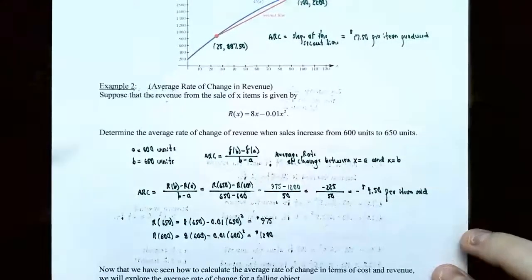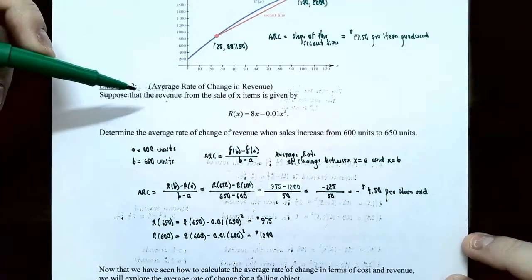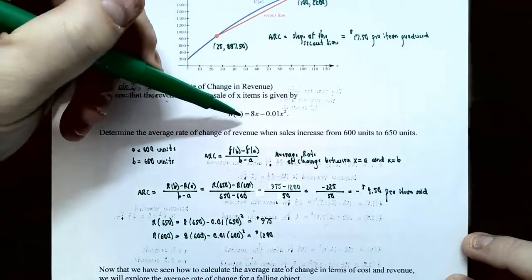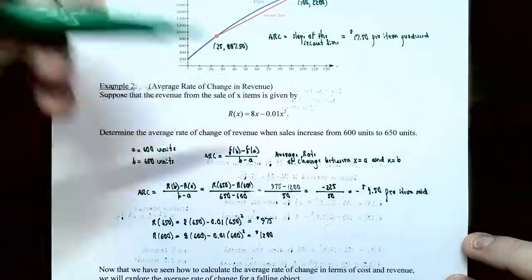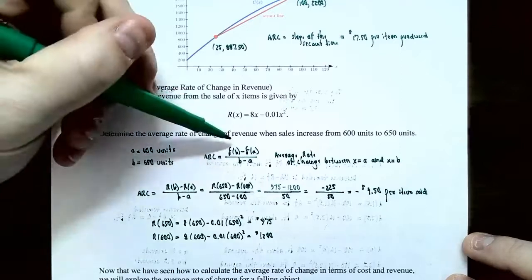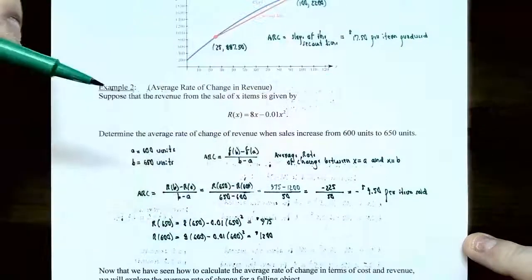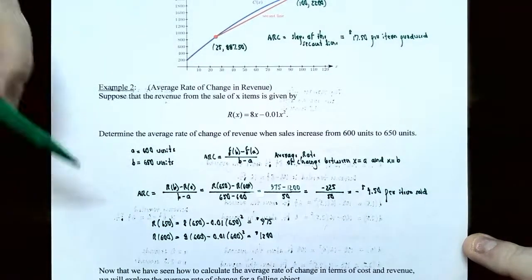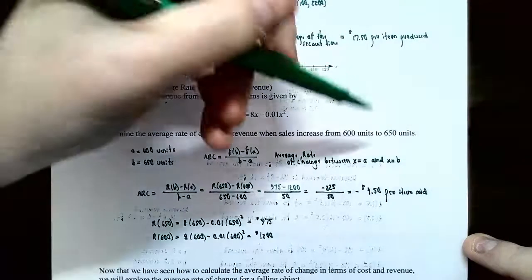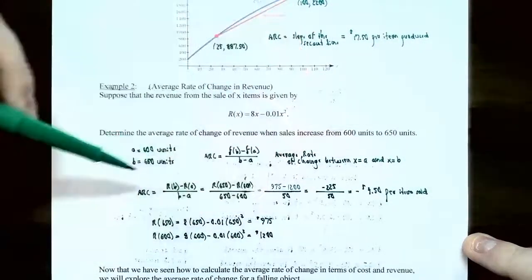Example two: average rate of change for revenue. Suppose the revenue function for the sale of x items is r of x equals 8x subtract 0.01x squared. Determine the average rate of change of revenue when sales increase from 600 units to 650 units. We have a closed interval — that's important for average rate of change — with starting value a equals 600 and ending value b equals 650 units.